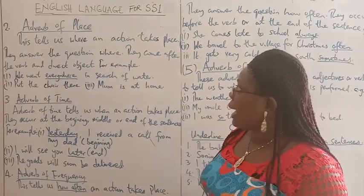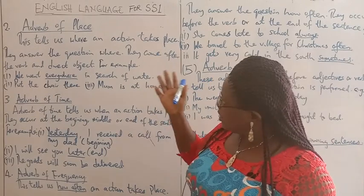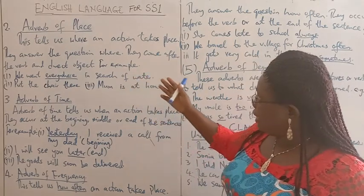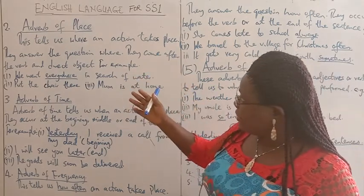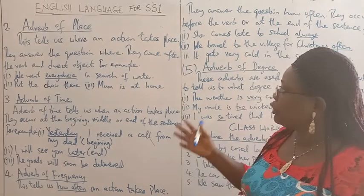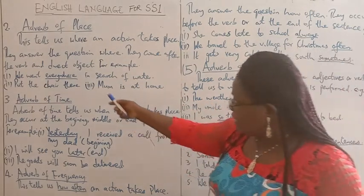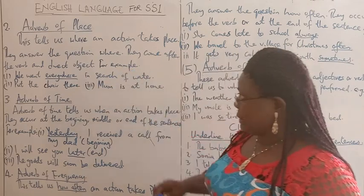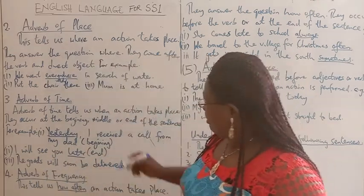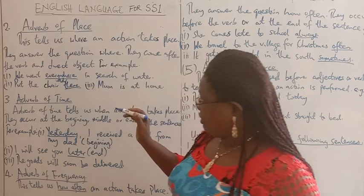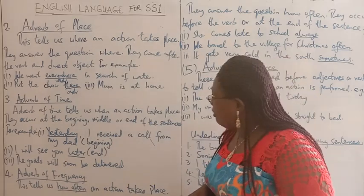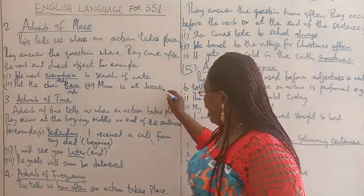Number two: adverb of place. Adverb of place tells us where an action takes place. They answer the question: where? They come after the verb and direct objects. For example: 'We went everywhere in search of water' — 'everywhere' here is an adverb of place. 'Put the chair there' — 'there' is also an adverb of place. 'Mom is at home' — adverb of place.